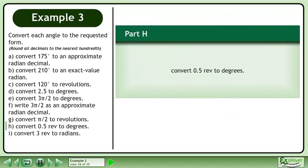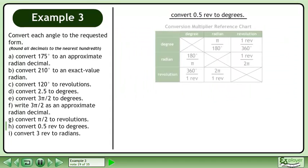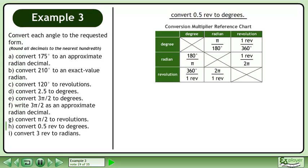In Part H, convert 0.5 revolutions to degrees. We'll use the Conversion Multiplier Reference Chart to assist us. We are converting from revolutions to degrees, so multiply 0.5 revolutions by 360 degrees over 1 revolution. Multiply to get 180 degrees.